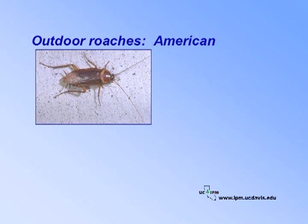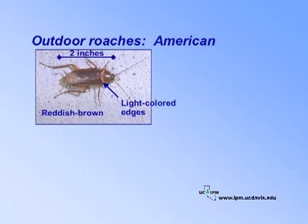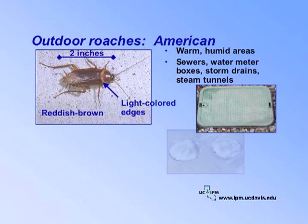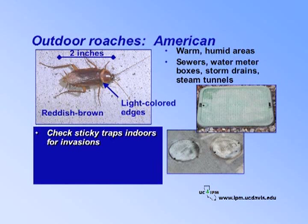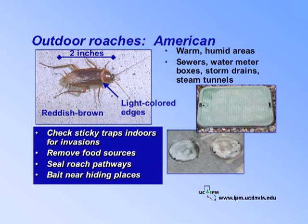American cockroaches are even larger than other outdoor roaches — about two inches long and reddish brown. The edges of the shield behind the head are lightly colored. The American cockroach is sometimes confused with Turkestan males; however, the Turkestan is much smaller and has yellowish tan wings. This species prefers warm, humid areas and is found primarily in sewers, water meter boxes, storm drains, and steam tunnels, but occasionally enters buildings looking for food. Check sticky traps indoors for invasions of American cockroaches. Remove food sources. Seal roach pathways into buildings. And bait near cockroach hiding places such as in water meter boxes or under manhole covers.